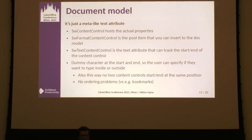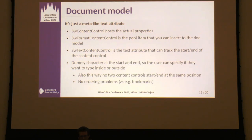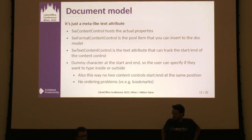Initially I only added a dummy character at the start, which allowed the cursor to explicitly decide when entering the content control — different character positions for just before versus at the start inside. Not having a dummy character at the end turned out to be annoying. If a content control is at the end of a paragraph, either you go to the end and start typing outside but end up inside, or vice versa. This is solved by also having a dummy character at the end.